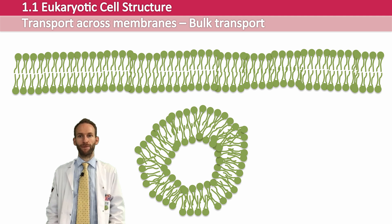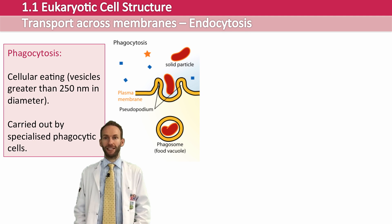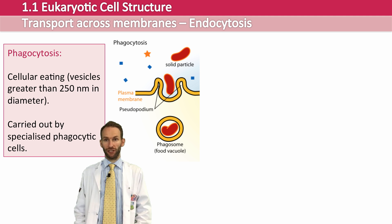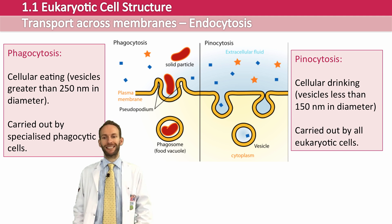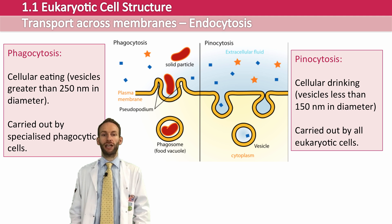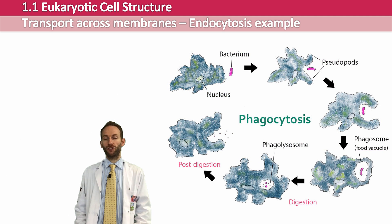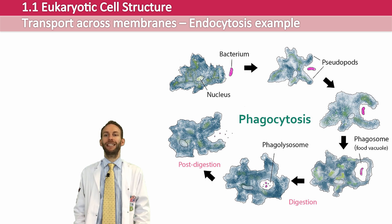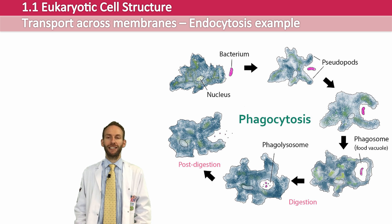There are two main types of endocytosis. Phagocytosis is a bit like cell eating, where cells take in food molecules, solid particles, or whole organisms. And there is pinocytosis, where cells take in fluid — so it's a bit like cell drinking. Pinocytosis is carried out by all eukaryotic cells, but phagocytosis is usually carried out by particular specialised cells — for example, macrophages, which are a type of white blood cell used to engulf bacteria in the immune system. They take in the bacteria by phagocytosis and then break them down using lysosomes.